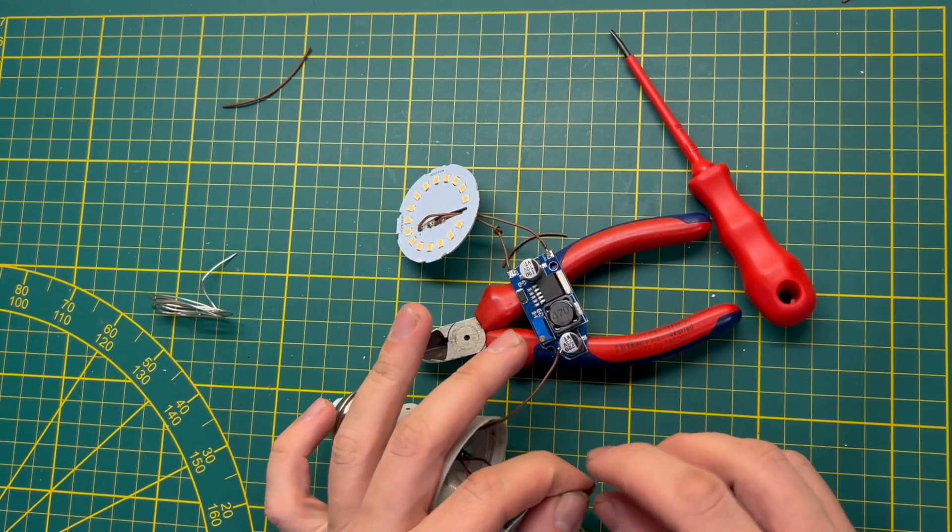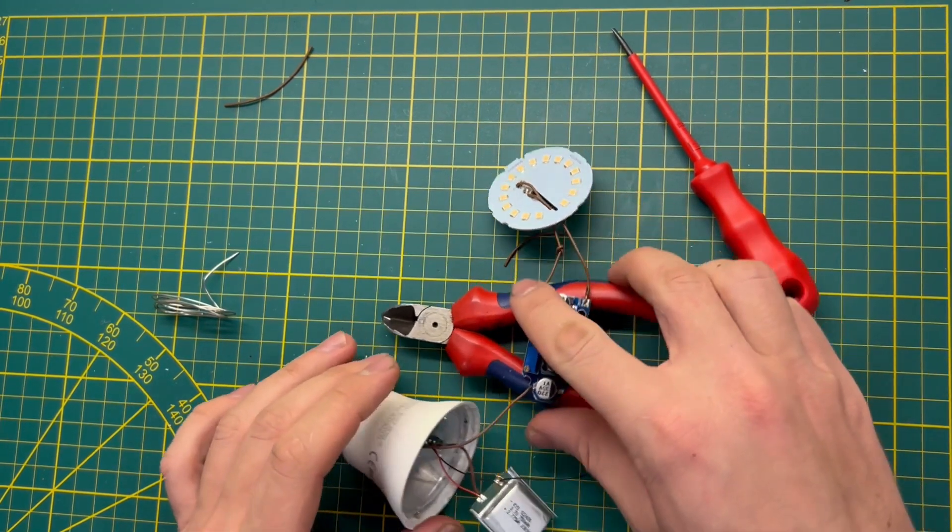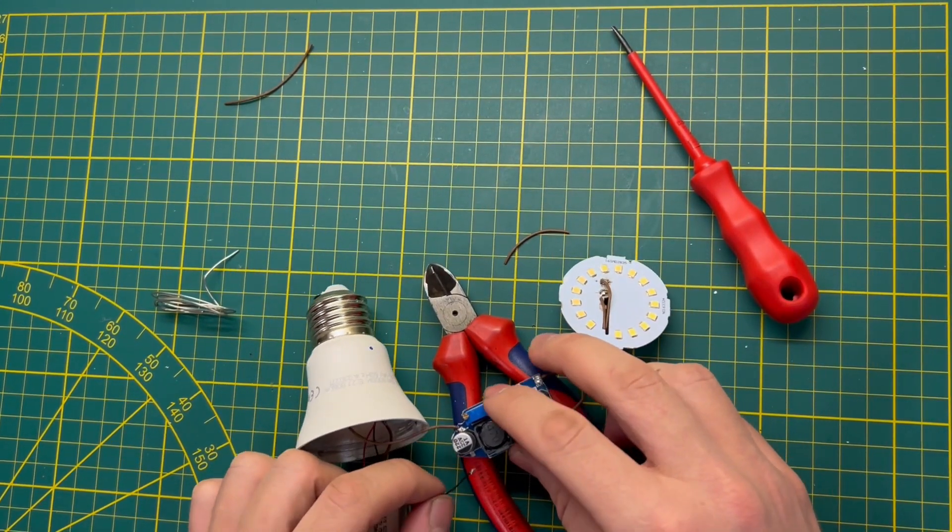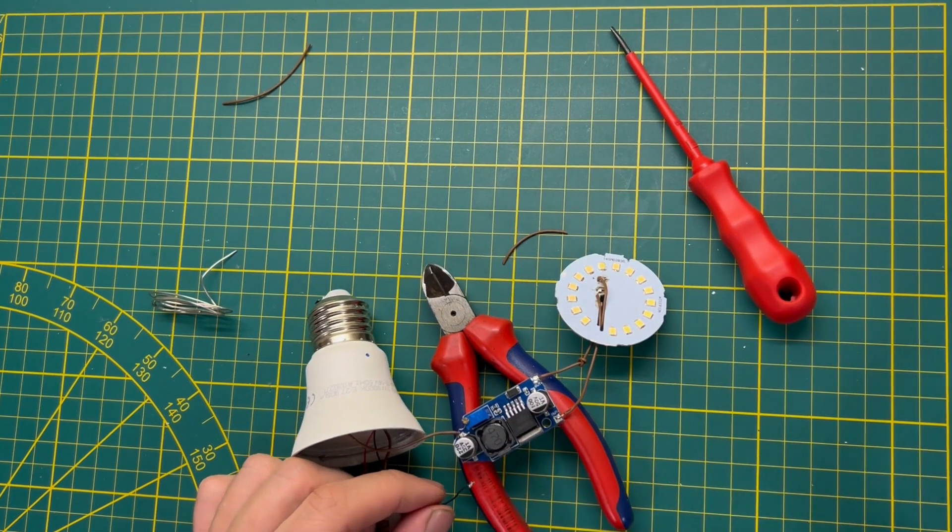Okay, now the plus wire from the switch is connecting to our board to the plus. And our minus from the battery we are connecting to the minus from this device, from the step up DC controller with our LED panel.